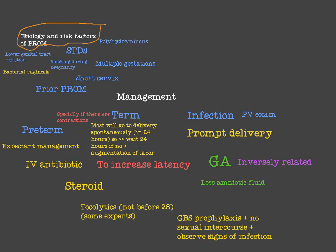The first risk factor is lower genital tract infection. Infections in general are the most important predisposing factor to rupture of membrane, and it is also the most common complication — for example, bacterial vaginosis. Chorioamnionitis also predisposes to premature rupture of membrane.